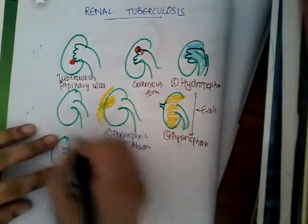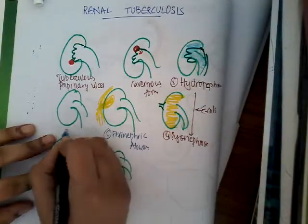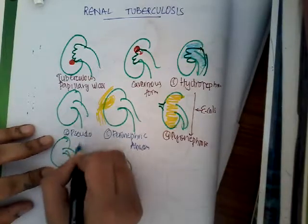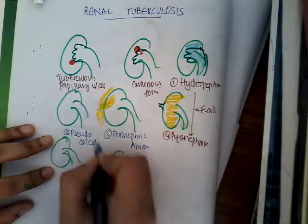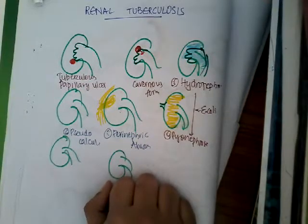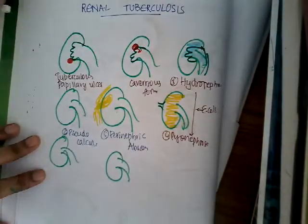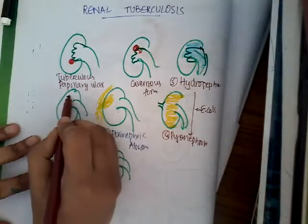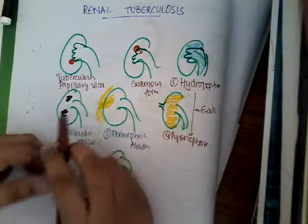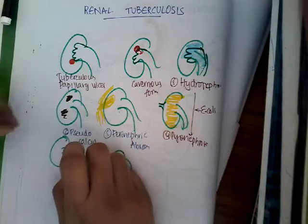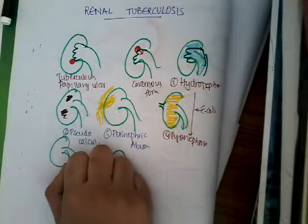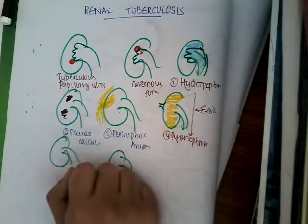The sixth type is pseudocalyculi. Because of the ongoing fibrosis and deposition of calcium, there is formation of pseudocalyculi in the kidney — that is, presence of calcified tuberculous areas in the kidney.